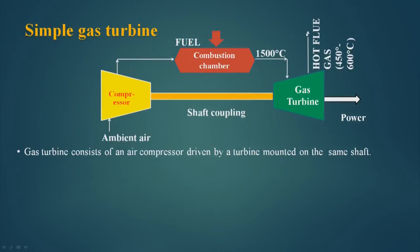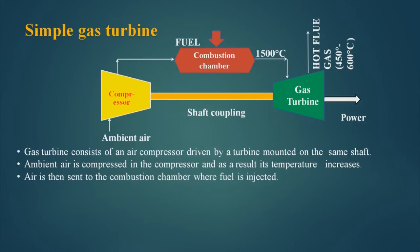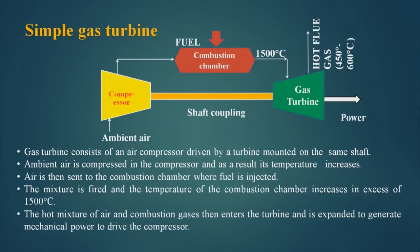The shaft is connected to the power system which generates power, giving power to the compressor as well as a generator or alternator where electricity is being generated. The hot gas that goes out is around 450 to 600 degrees centigrade — hot enough to service the process. If we use this hot flue gas as heating utility in the process, we will be able to save a lot of money. The gas turbine consists of an air compressor driven by a turbine mounted on the same shaft.